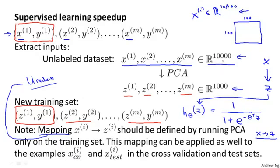And by the way, in this example, I talked about reducing the data from 10,000 dimensional to 1,000 dimensional. This is actually not that unrealistic. For many problems, we can actually reduce the dimensional data by 5x, maybe by 10x.